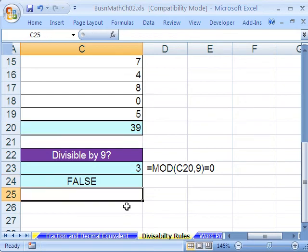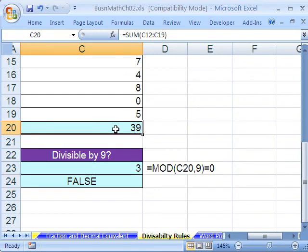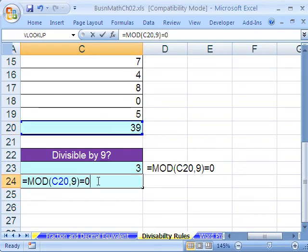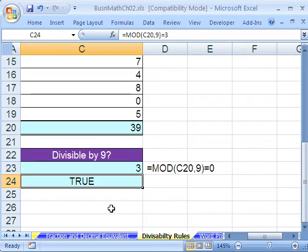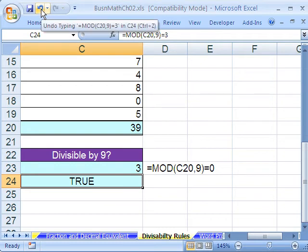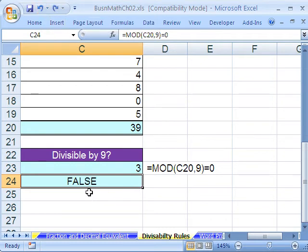Just to show you, since this, or if I click in the cell and change that to a 3, notice that it comes out true. Now I'm going to use the keyboard shortcut for undo. There it is in 2007. Control Z, because I want to keep it there. False, it is not divisible by 9.